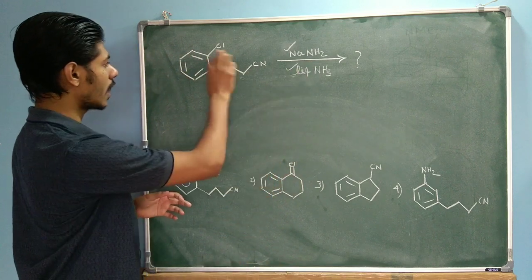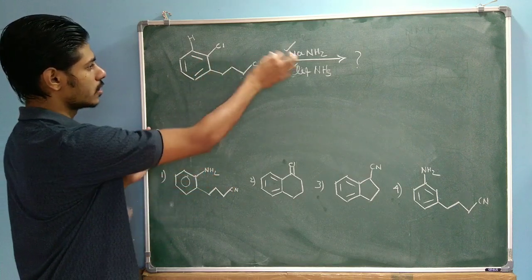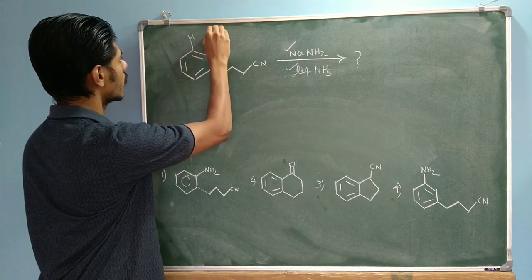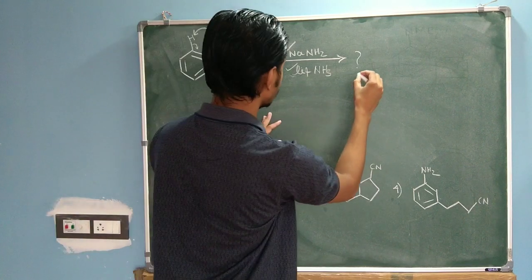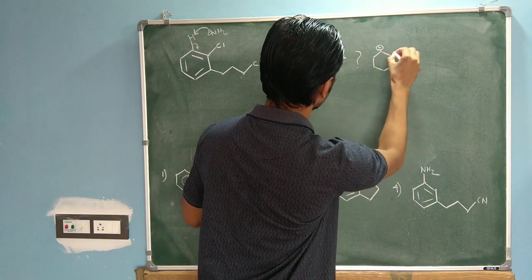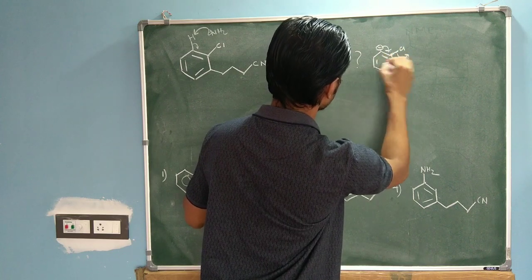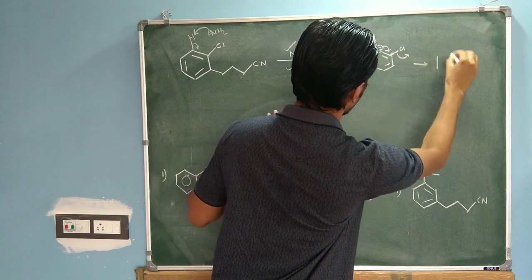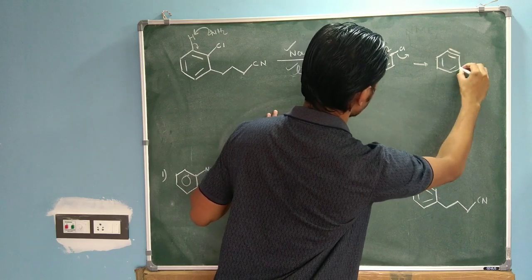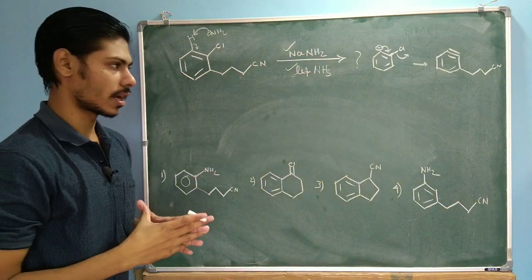Sodium amide is given, and here you have a hydrogen adjacent to the chlorine. So this NH₂⁻ will take a proton from here, generating this anion. In the next step, when the electrons push, the chloride will leave, and you will get the benzyne intermediate with the side chain. This is the first step of the reaction.